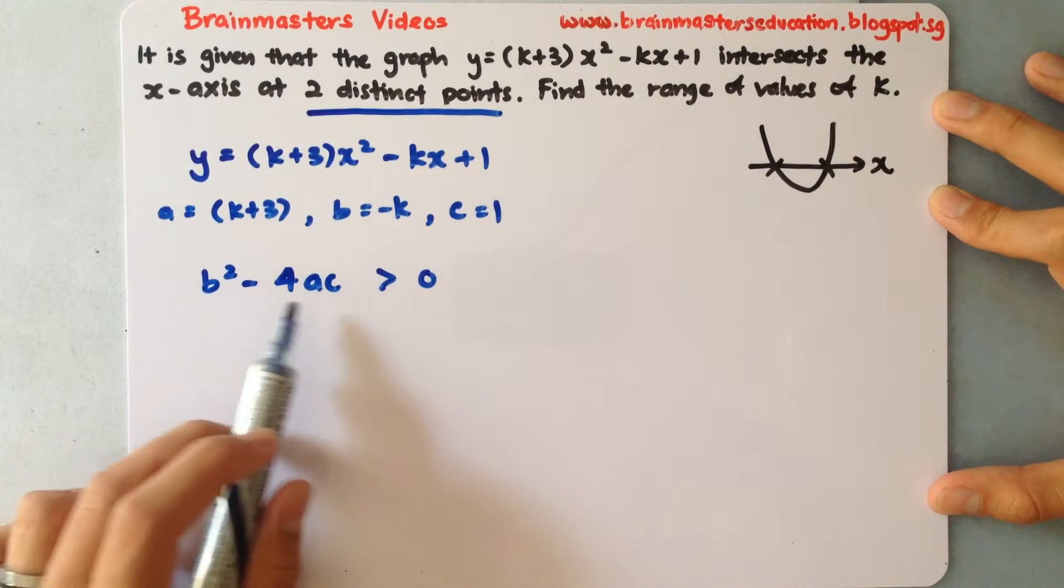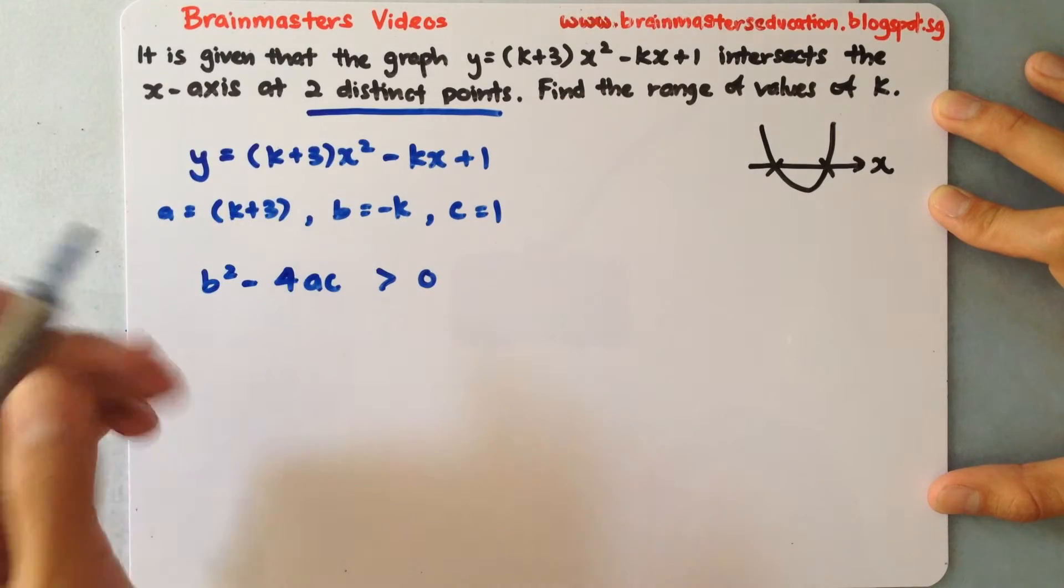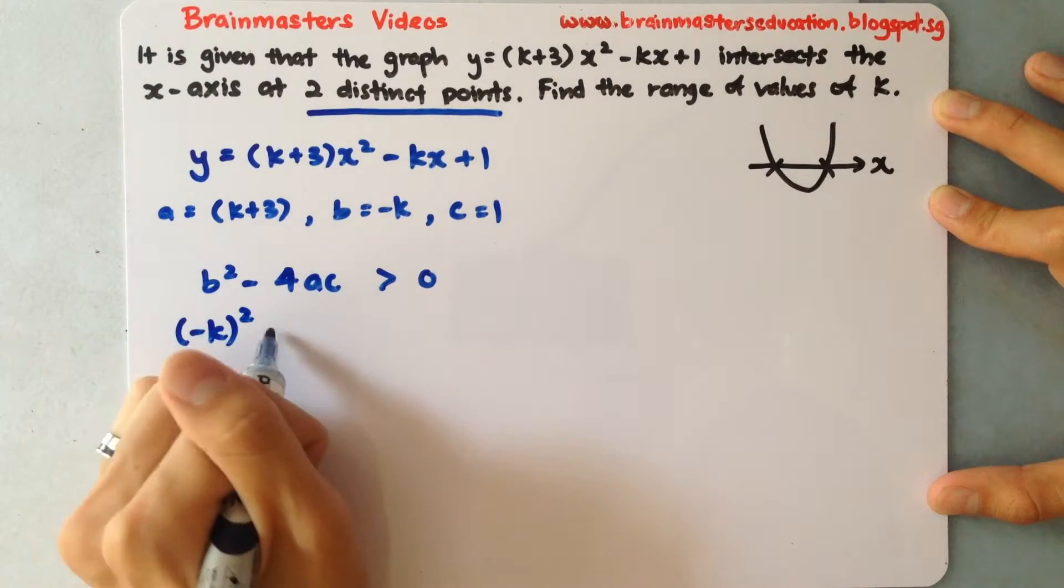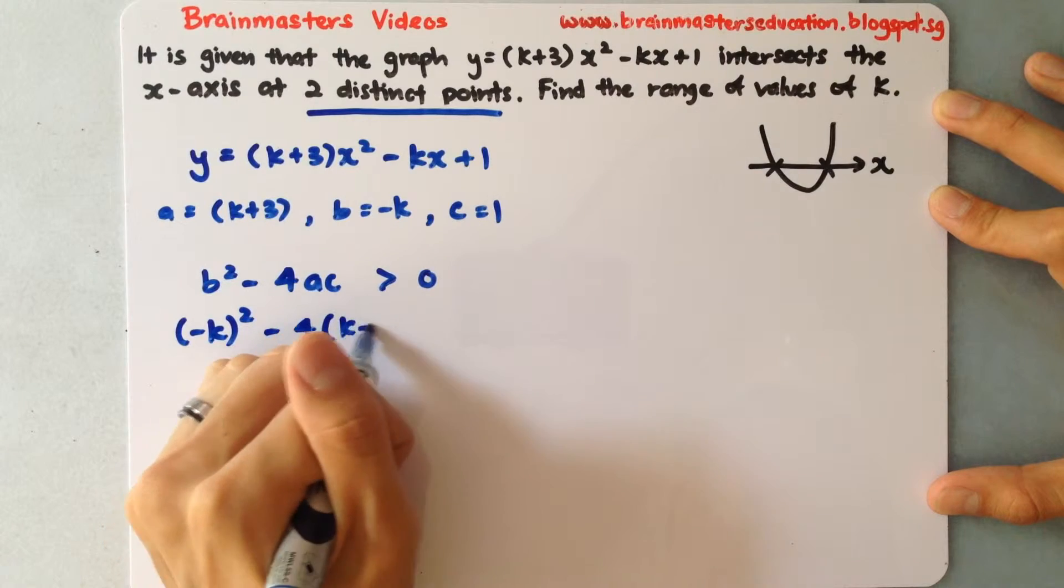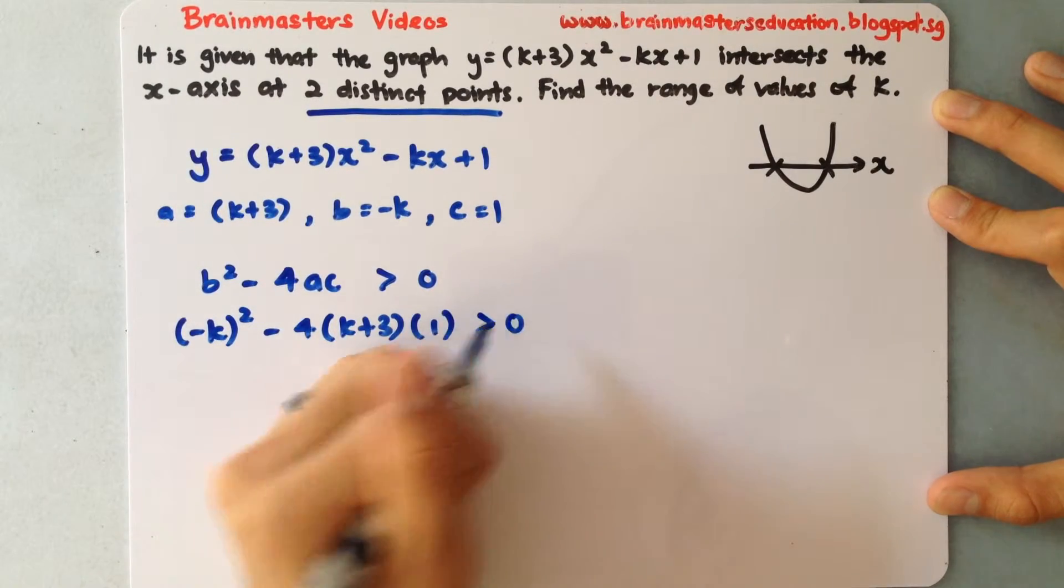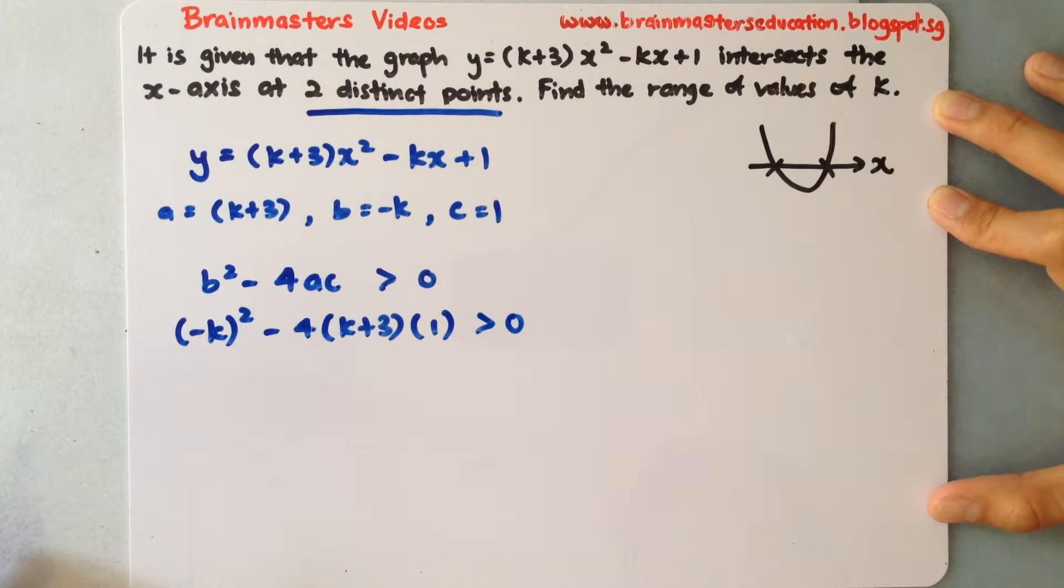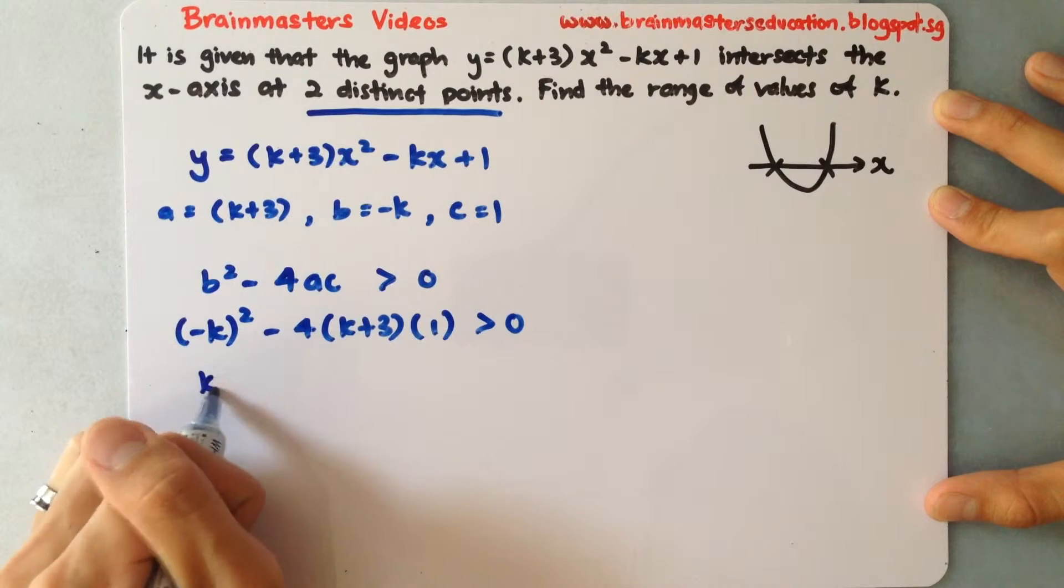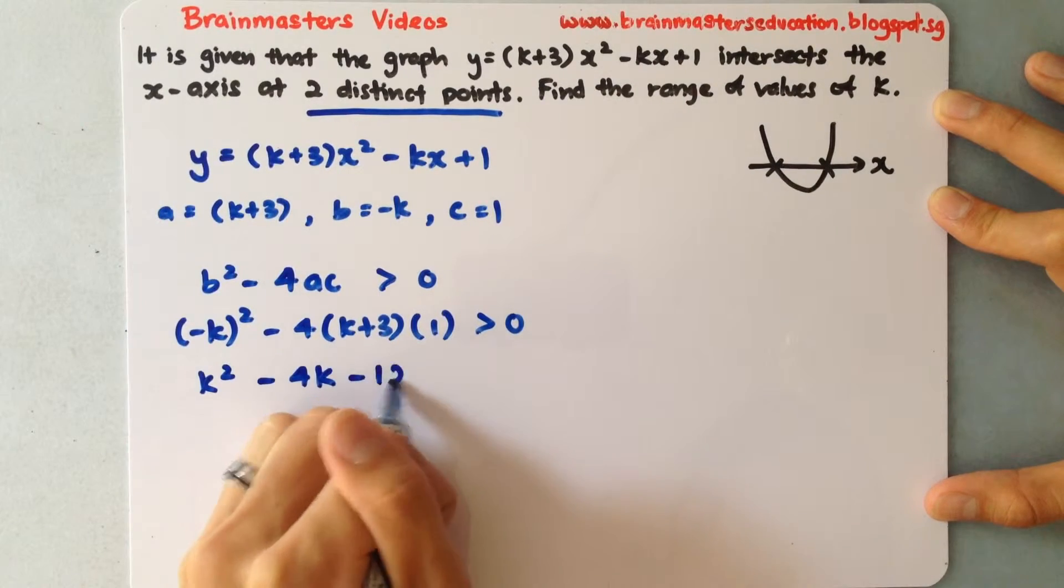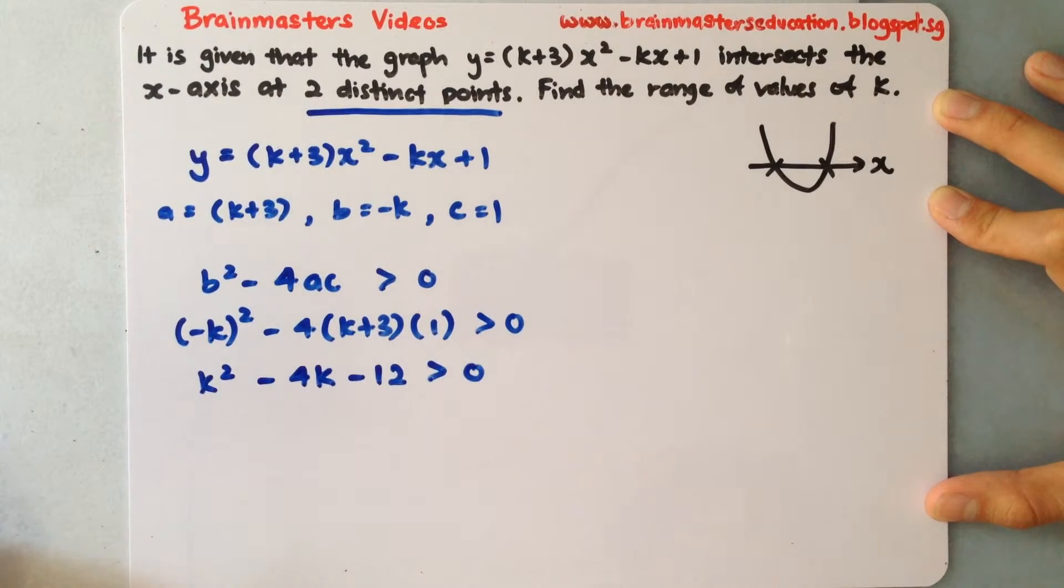Over here now I have my b square minus 4ac and I have my points a and b. I will substitute them in. So it's minus k square minus 4 multiply k plus 3 multiply 1, more than 0. I need to simplify this that will give me k square minus 4k minus 12 is more than 0.